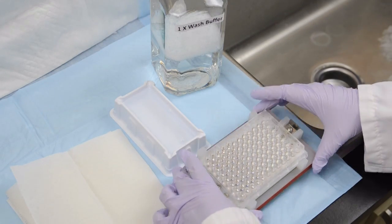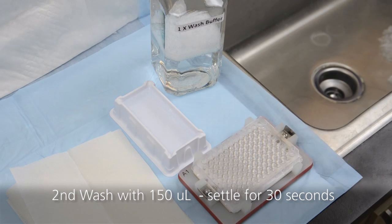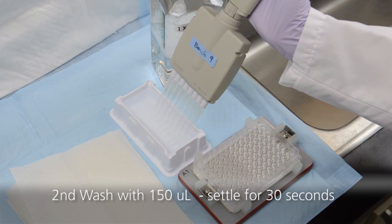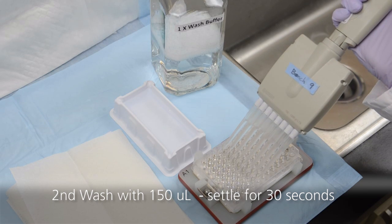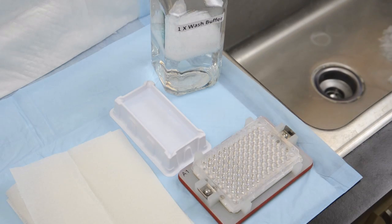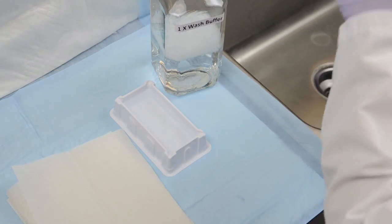Take the handheld magnet and plate assembly and quickly invert the contents into the sink. Wash the plate a second time by pipetting 150 microliters of wash buffer into each well and allow the beads to settle to the bottom of the plate for 30 seconds. Take the assembly and quickly invert the contents into the sink.